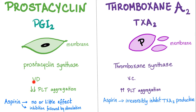Functions: prostacyclin causes vasodilation and decreased platelet aggregation. Thromboxane A2 causes vasoconstriction and increased platelet aggregation. In short, prostacyclin is anticoagulation, and thromboxane A2 is very much pro-coagulation.